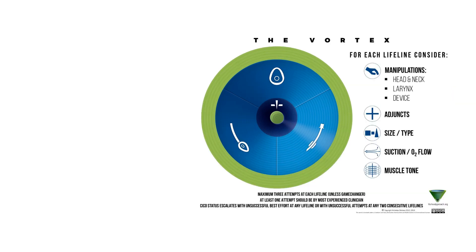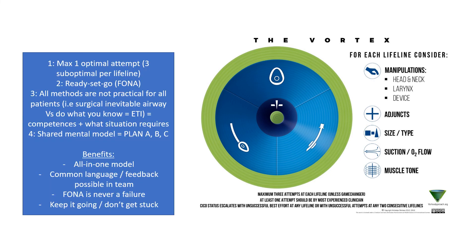The Vortex model: the adjuncts below the vortex are optimizing measures — OPA, NPA, suction, muscle relaxants, size adjustments, and so on. These are called lifeline optimization tools. Each attempt uses the ready-set-go technique, with a maximum of one optimal attempt per lifeline.